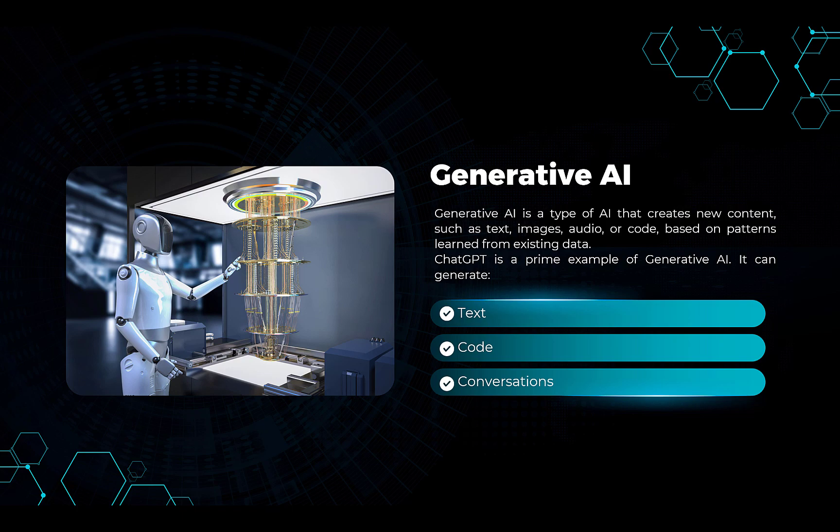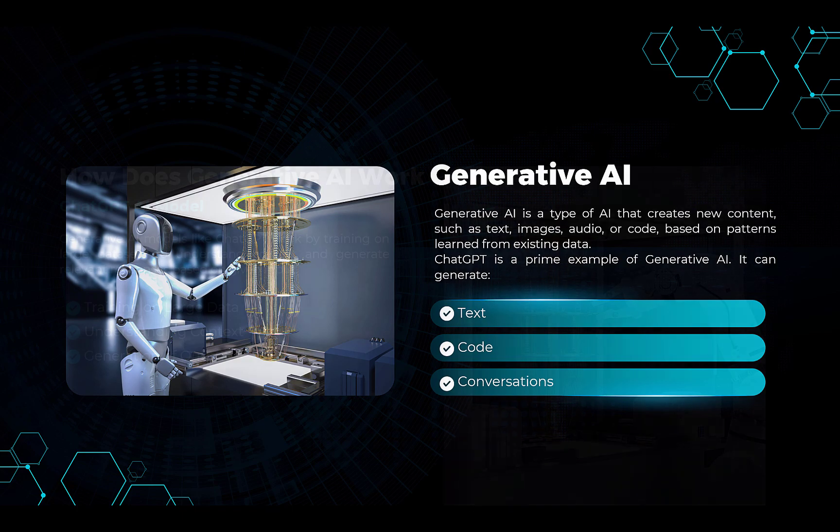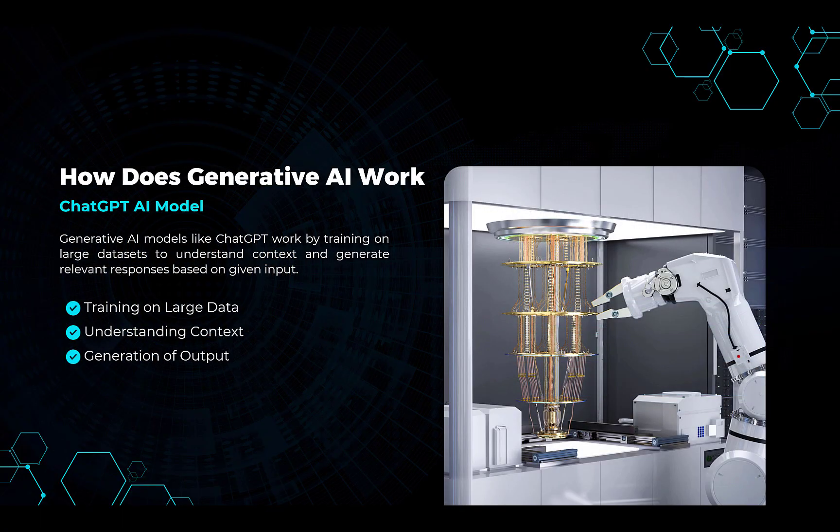Now we need to understand on a high level how generative AI works. Generative AI models like ChatGPT work by training on large datasets to understand context and generate relevant responses based on the given input — so training on large datasets, understanding context, and generation of output.